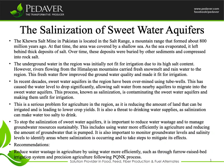The Salinization of Sweetwater Aquifers. The Khrasalt Mine in Pakistan is located in the Salt Range, a mountain range that formed about 800 million years ago. At that time, the area was covered by a shallow sea. As the sea evaporated, it left behind thick deposits of salt. Over time, these deposits were buried by other sediments and compressed into rock salt.